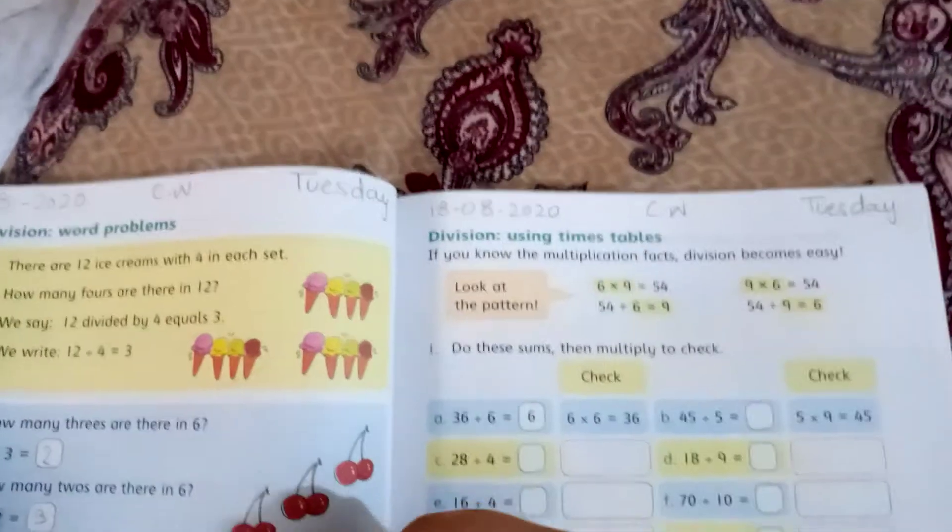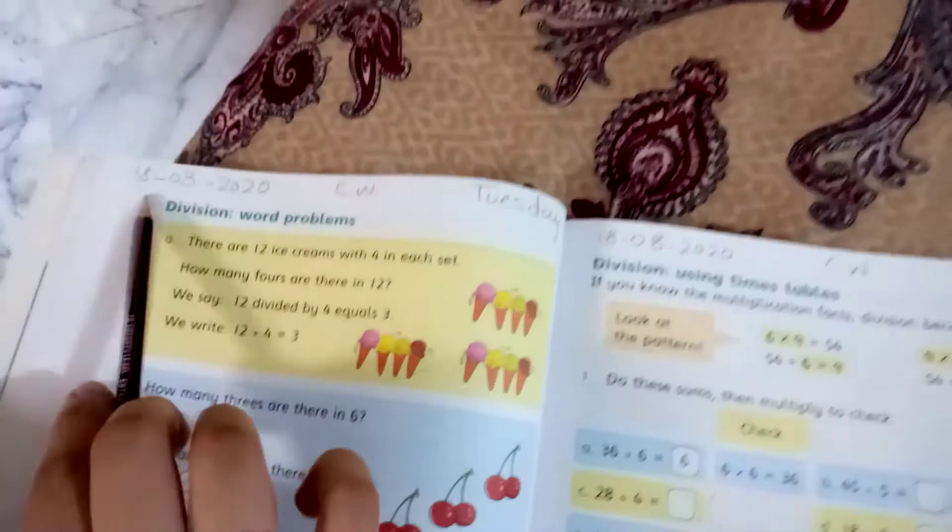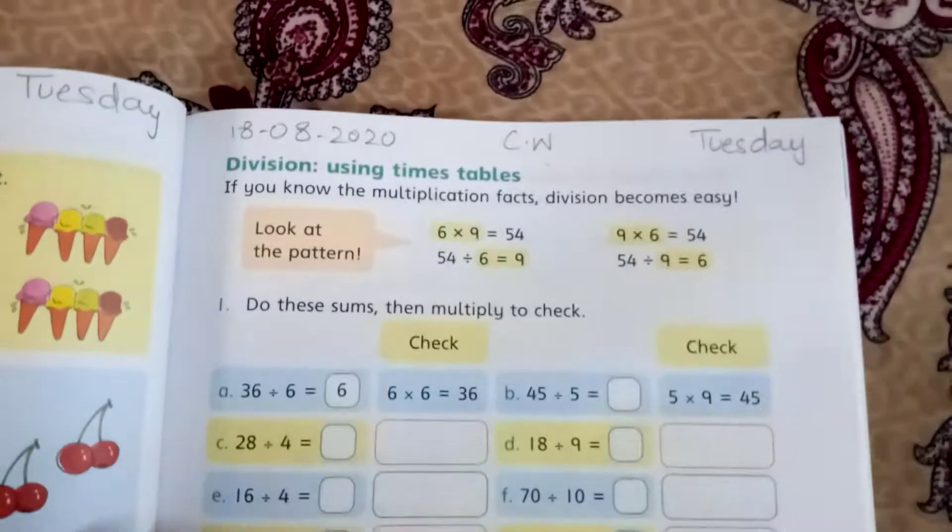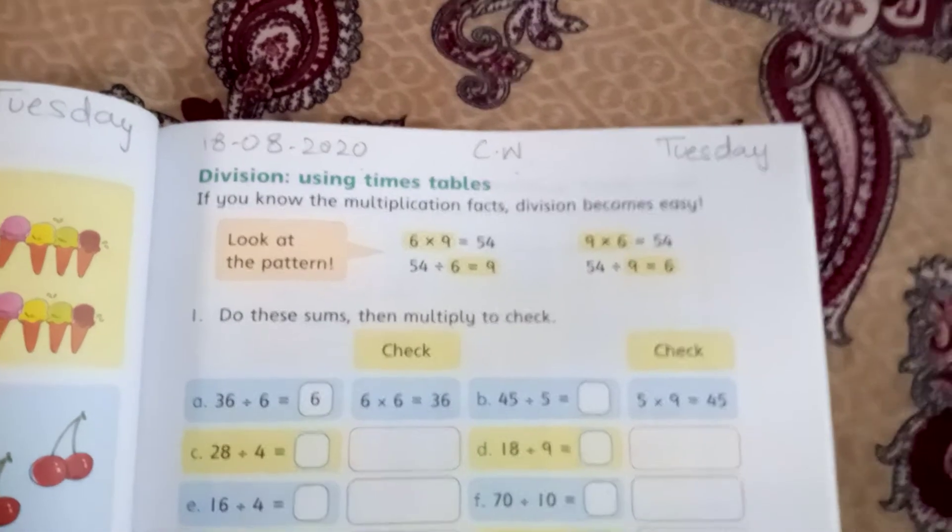Okay, turn to page 82. This is page number 82. Write the date: 18-8-2020 class work. Tuesday 18-8-2020 class work. Division using times tables.